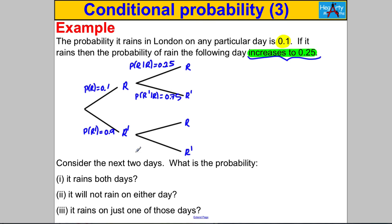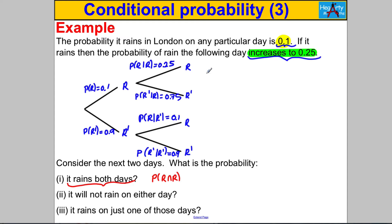Now if it didn't rain on the first day, we assume the probability it rains on any given day is 0.1 — we're not told that changes. So the probability it rains given it didn't rain is 0.1, and the probability it doesn't rain given it didn't rain is 0.9. We've got all the probabilities. For the probability it rains both days, that's 0.1 multiplied by 0.25, which equals 0.025.